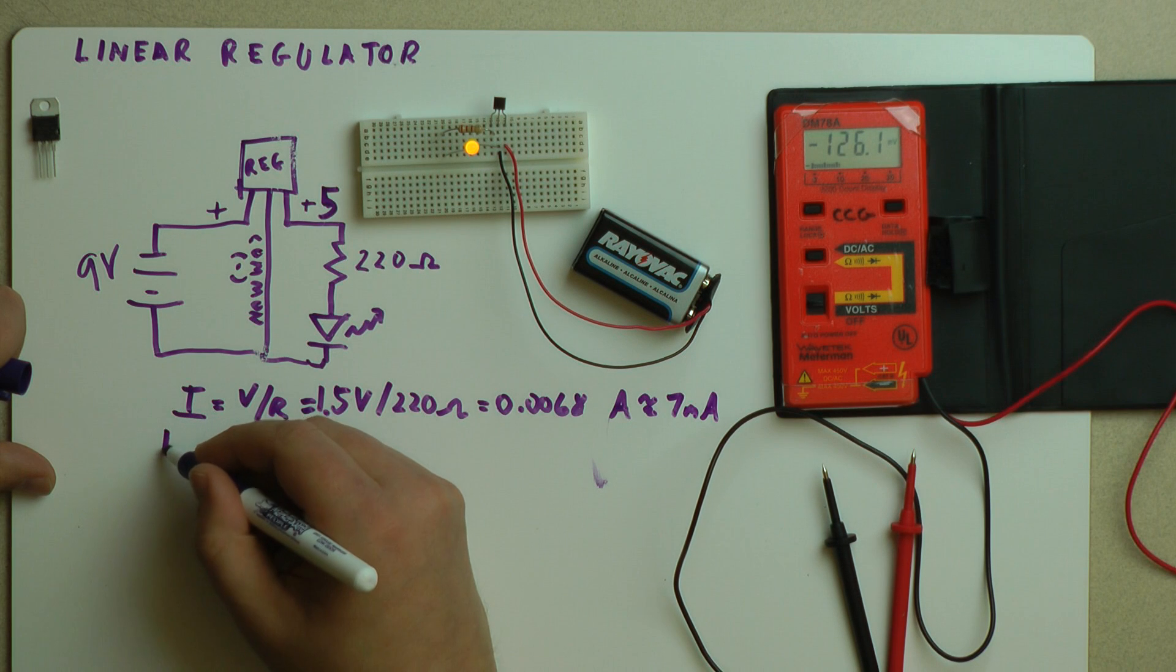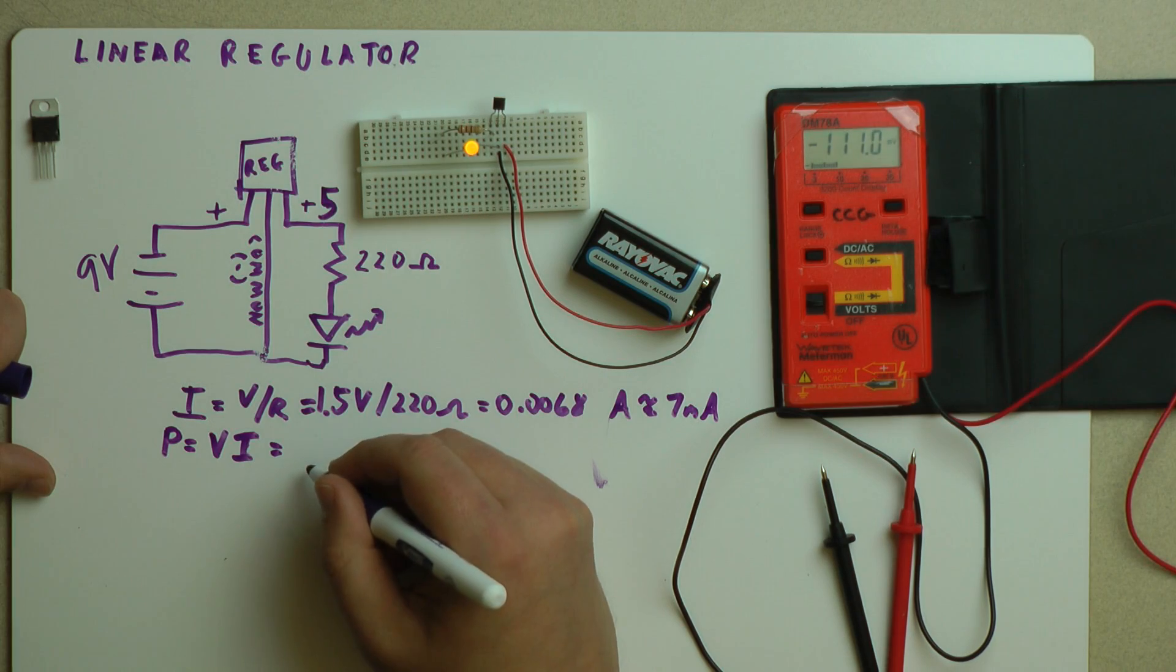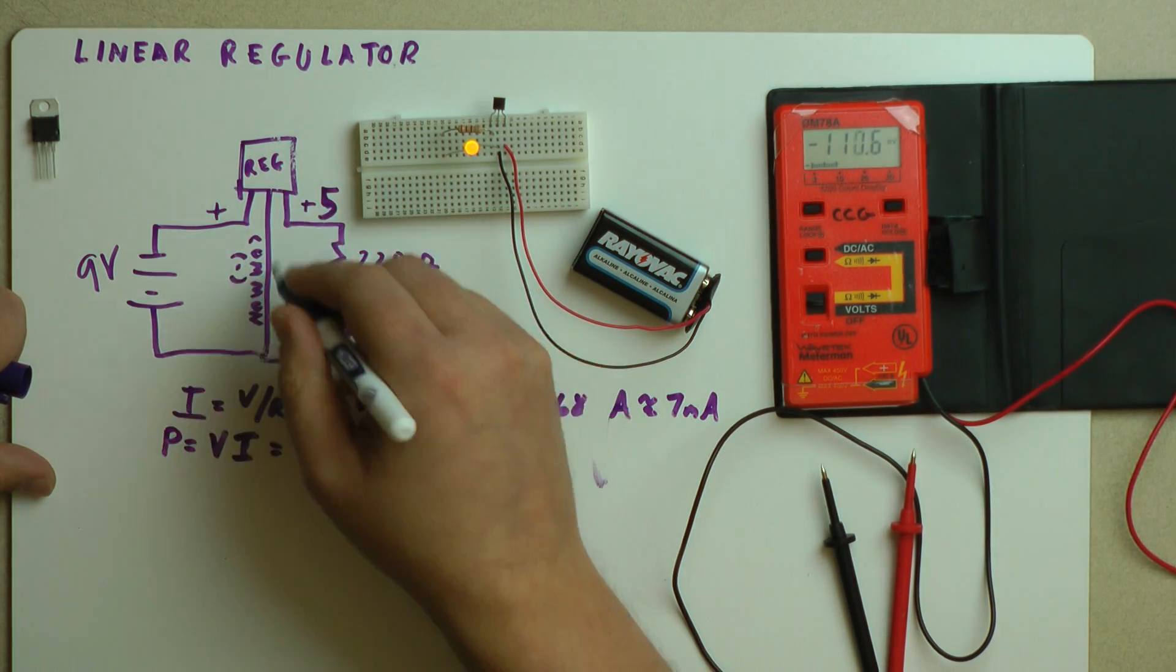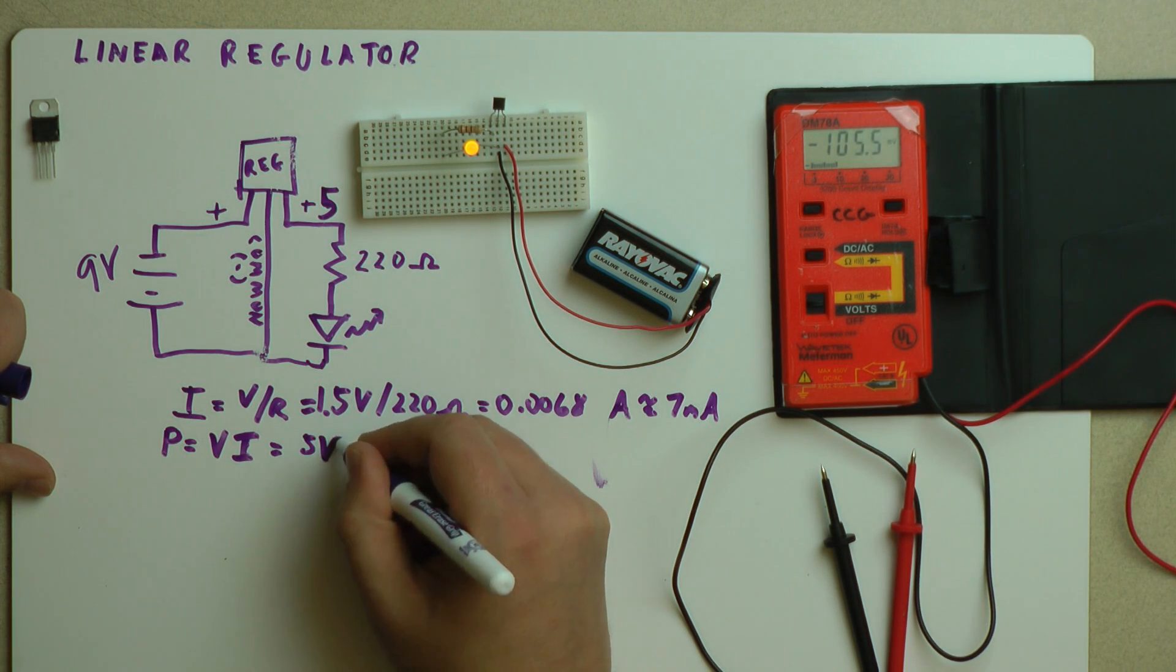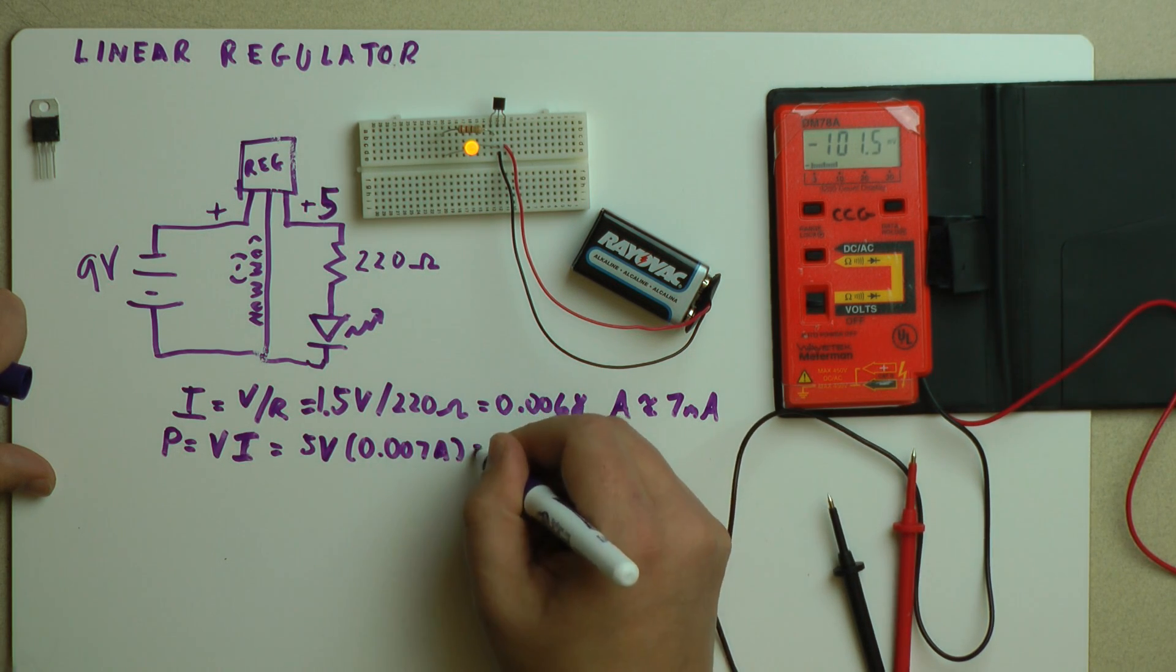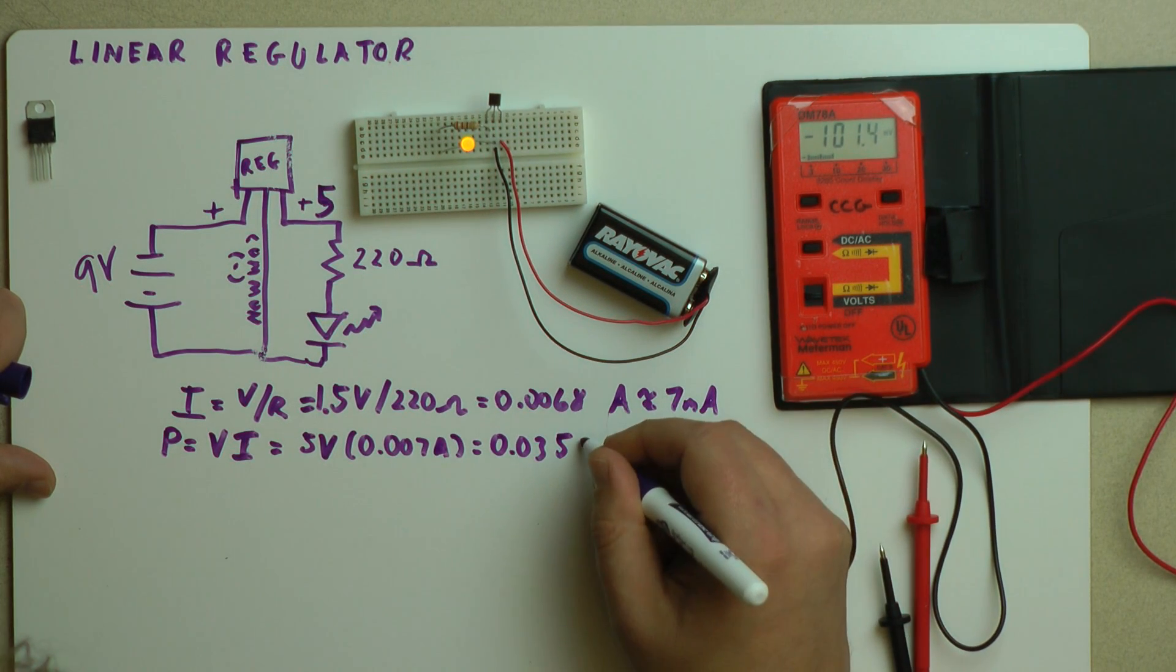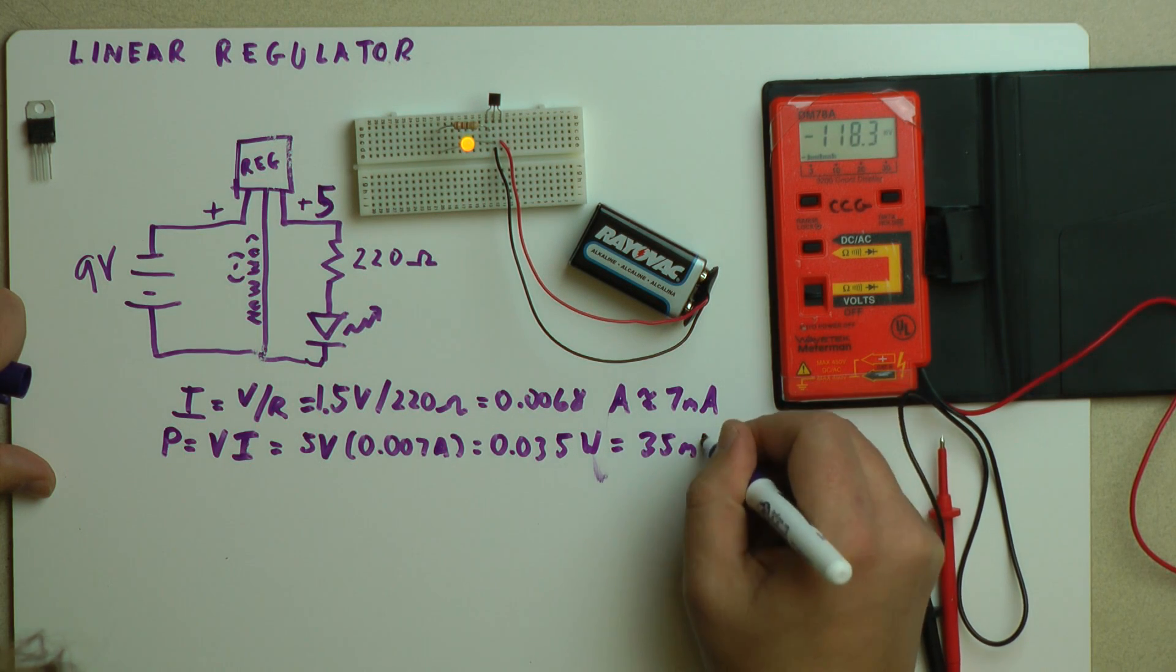So how much power is that side of the circuit using? P equals V times I, so that's the power for the entire right-hand side of the circuit here. So that's 5 volts times 0.007 amps, which equals 0.035 watts, which is equal to 35 milliwatts.